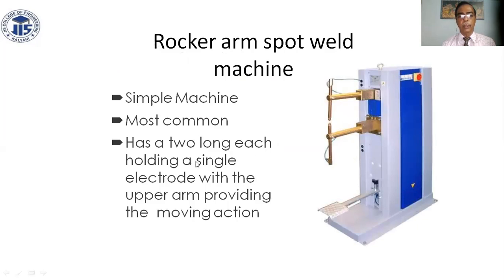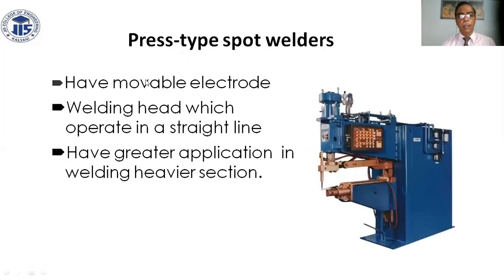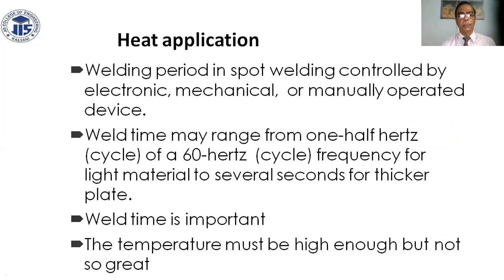The rocker arm spot welder is the most common. It has two long arms holding a single electrode, with the upper arm providing a moving fixture. The press type spot welding machine has mobile electrodes and a welding head offering a single line, with data application for welding heavier sections. The welding period is controlled electronically, mechanically, or manually; weld time may range from 1.5 cycles at 60 Hz for light material to several seconds for thicker plates.